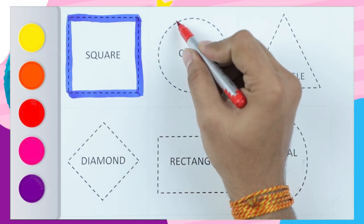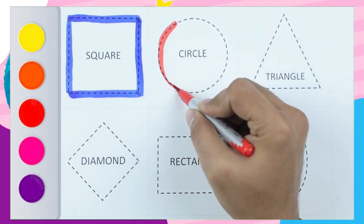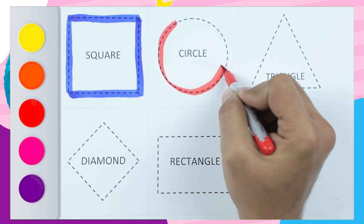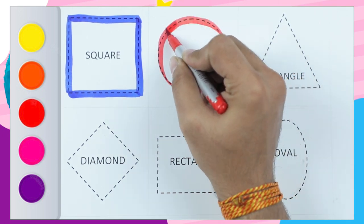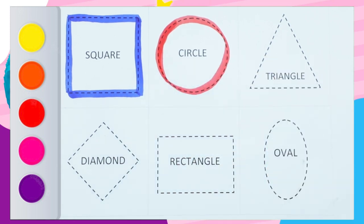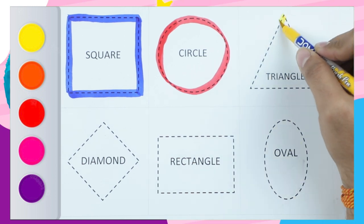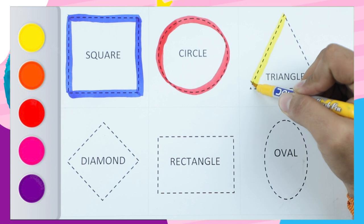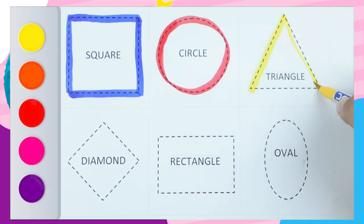Circle — red color circle. Wow, it's a circle! Red color circle. Yellow color triangle — sliding line, sliding line.